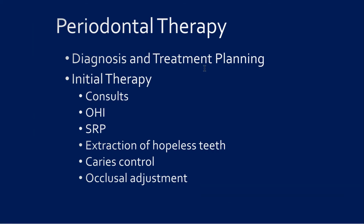The basis of any treatment starts with diagnosis and treatment planning. Through your prior courses in periodontics, you know that this entails getting the appropriate consults first, be they medical or dental. Next we need to provide tailored instructions in oral hygiene to our patient. Other elements of the initial phase of periodontal therapy may include scaling and root planing, extraction of hopeless teeth, caries control, or occlusal adjustment.